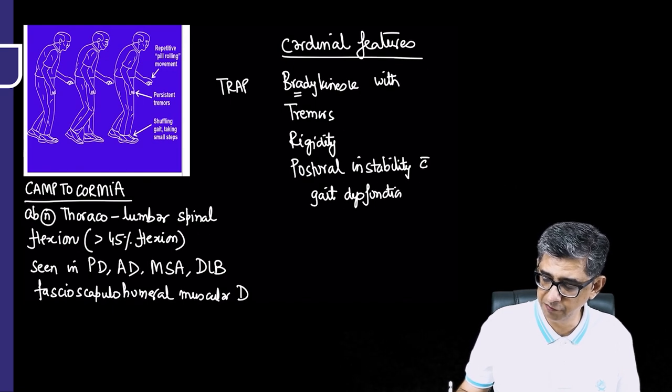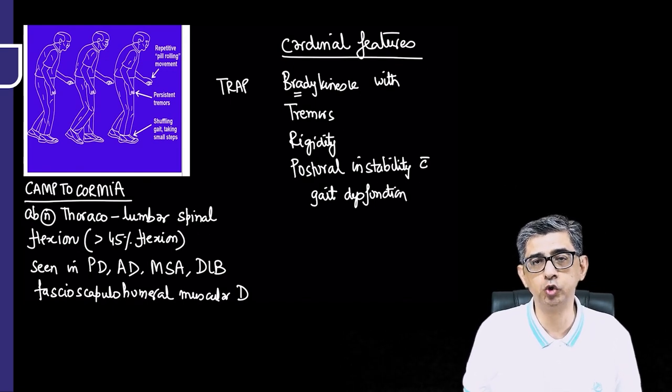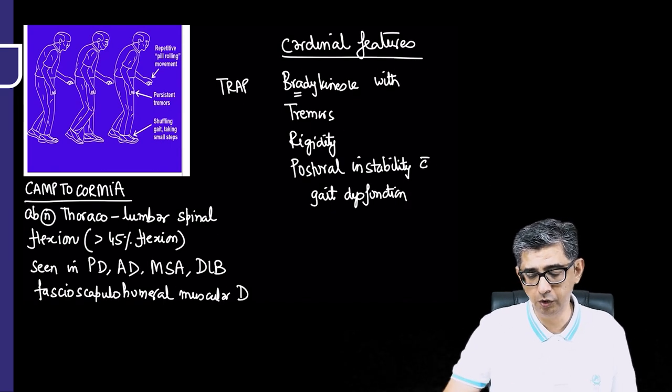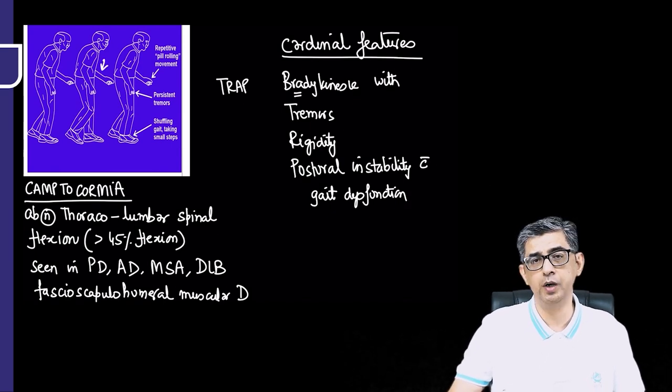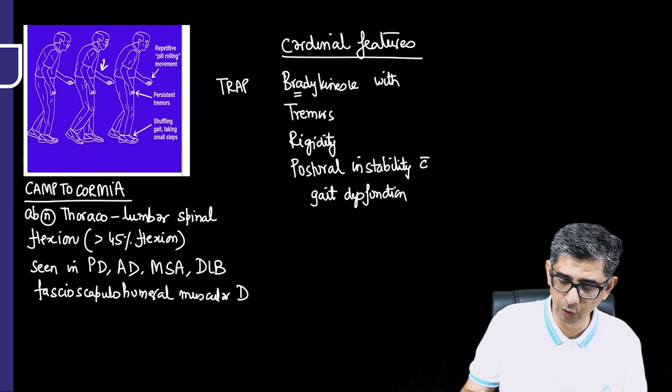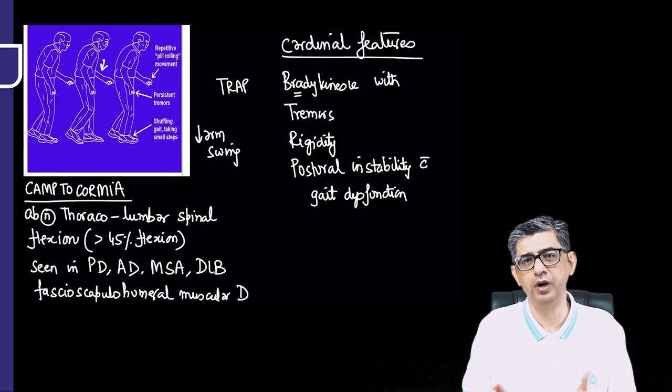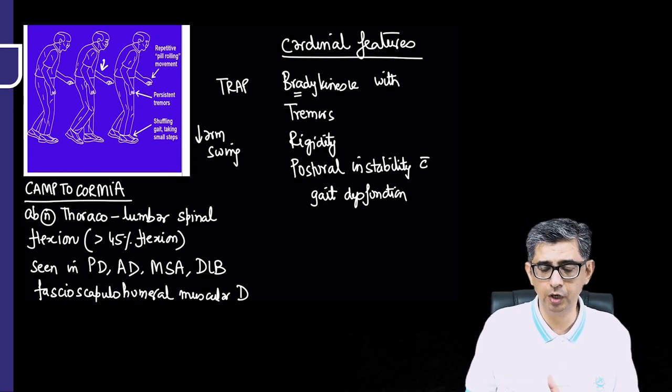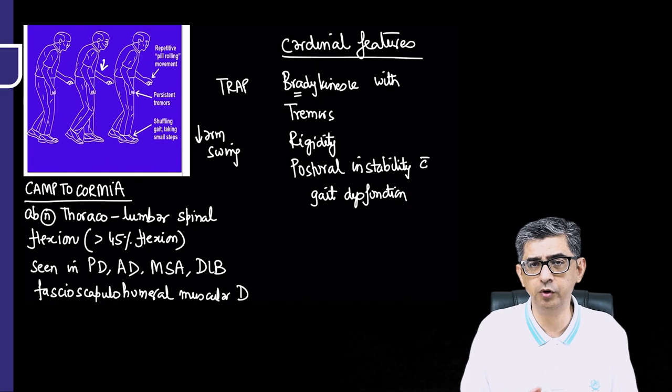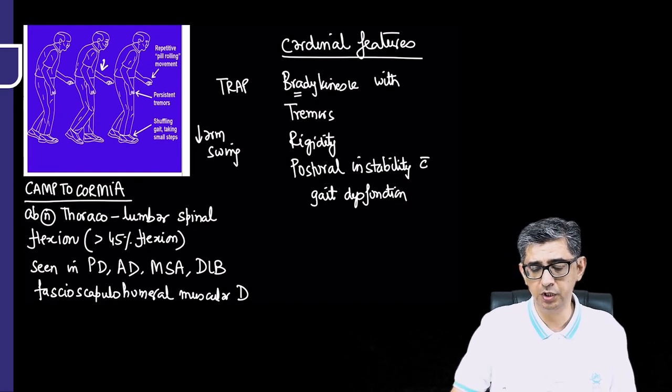This gait dysfunction that we read is always a fascinating gait, where the person will have a stooped posture, bent forward. The arms will be on the side of the body. There will be substantially reduced automatic arm swing. Whenever we walk, our arms tend to swing automatically. We don't realize that, but in these patients the arm swing would be very minimal or will be totally absent.